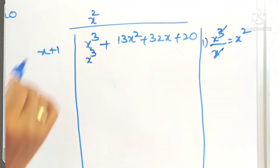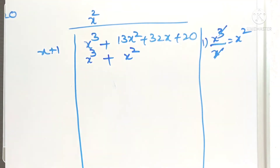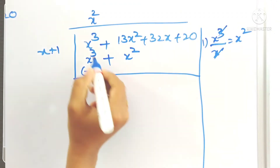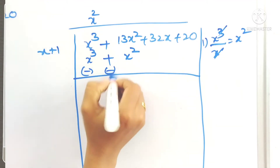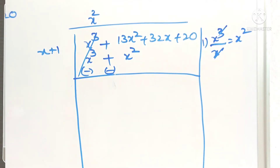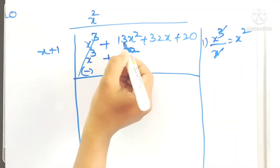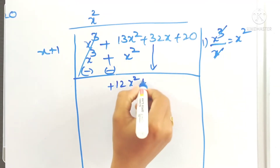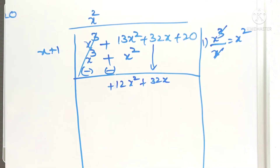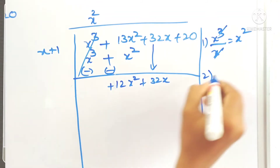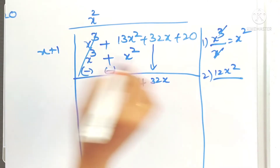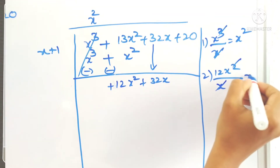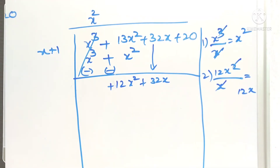Multiply x² by (x + 1) to get x³ + x². Now subtract: change plus to minus. x³ − x³ cancels, and 13x² − x² = 12x². Bring down the next term to get 12x²+ 32x. For the second term in the quotient, divide 12x² by x to get 12x.